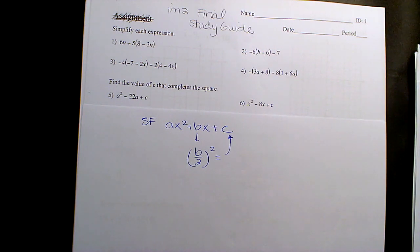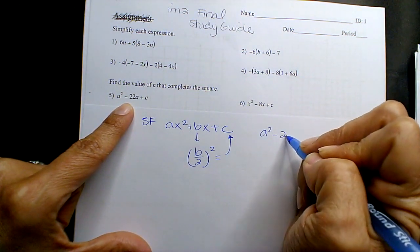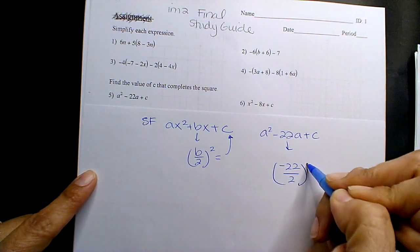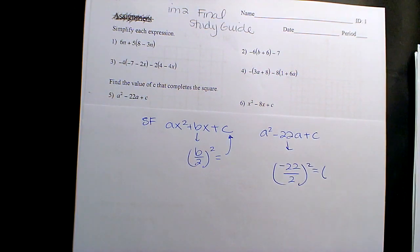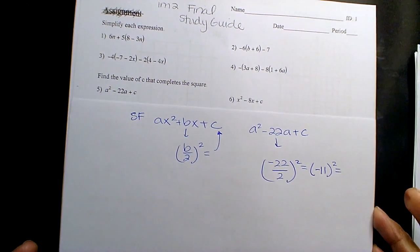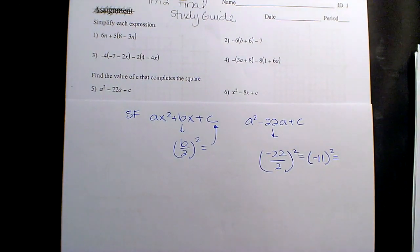So if the b value here is negative 22, negative 22 divided by 2 squared. What's negative 22 divided by 2? Negative 11, and then what is negative 11 squared? You guys should know this number. What's 11 squared?